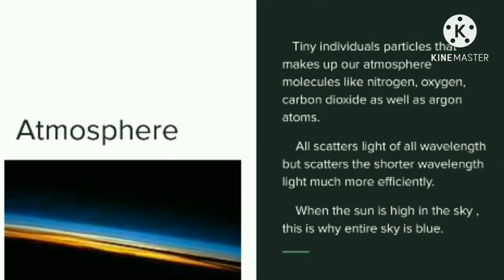Because these molecules are all much smaller than the wavelength of light itself, the shorter the wavelength of light, the better it will scatter. While sunlight falls everywhere on the dayside of the Earth's atmosphere, the red wavelengths of light are only 11% as likely to scatter, and therefore less likely to reach our eyes than violet light is. When the sun is high in the sky, this is why the entire sky appears blue.